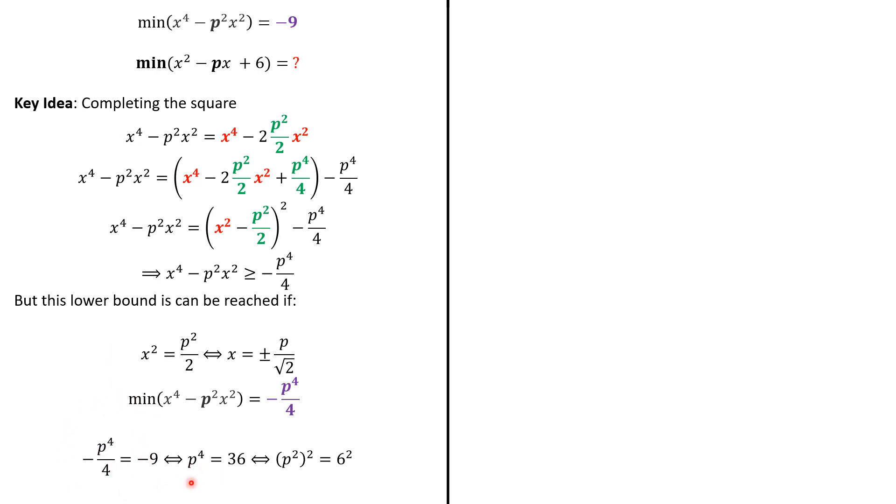So, multiplying both sides by -4, we have p⁴ equals 36. It will write as (p²)² equals 6².